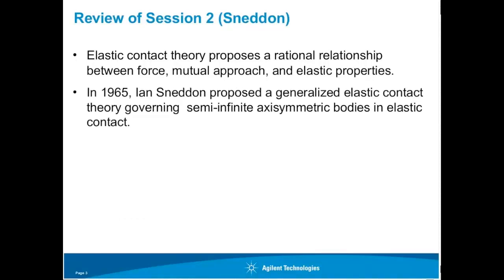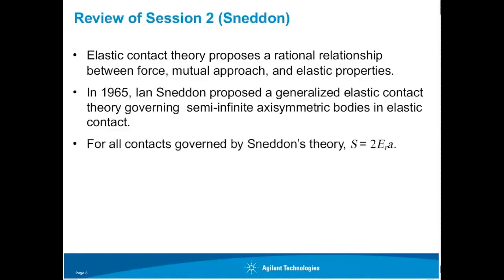In 1965, Ian Sneddon proposed a generalized elastic contact theory governing semi-infinite, axisymmetric bodies in elastic contact. We saw that for all contacts governed by Sneddon theory, there was a very simple relationship between the stiffness, the reduced modulus, and the contact radius A.